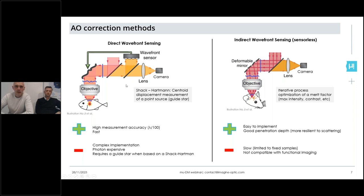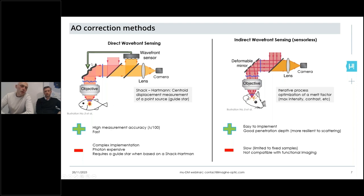This method is particularly effective in terms of accuracy, since wavefront sensors are accurate up to lambda over 100 typically, and it's fast because it's a direct wavefront measurement method. However, this method requires some light to be used for wavefront sensing, so it can be considered photon-expensive. It also requires integrating both a wavefront modulator and a wavefront sensor into the system, which can be considered a complex implementation.